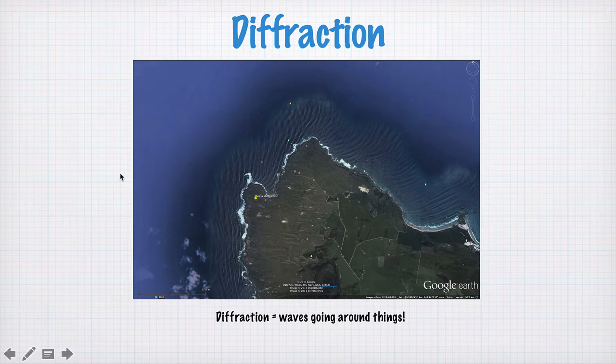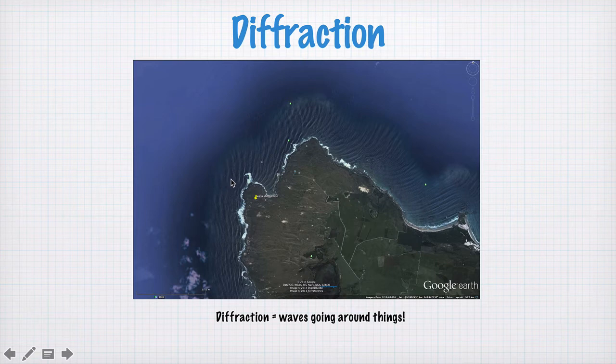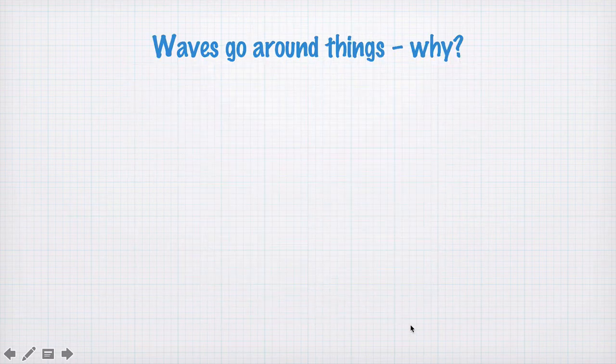Diffraction is a general property of any waves. You can see it in water waves here. Waves coming this direction towards this headland, wrap around and change direction and arrive on this beach. So diffraction, simply put, is waves going around things.